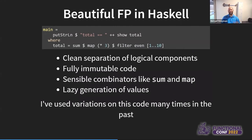I believe you could take a non-programmer, show them this Haskell code, and they could get a pretty good idea about what it's doing. We can see right here we are iterating over the numbers one through ten — 1..10. Filter even — cool. Map times three — we apply times three to every even value. Then we sum them up. This is the kind of code where FP really shines: a clean separation of all logical components. Every single bit is fully immutable; I never had to mutate a variable. I have sensible combinators — instead of reinventing mapping and summing inside a for loop, I reuse functions that already exist. And I'm lazily generating values; Haskell will lazily produce these, and with optimizations you won't even get any allocation — all of this runs in a tight inner loop.